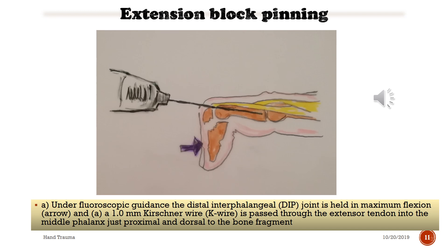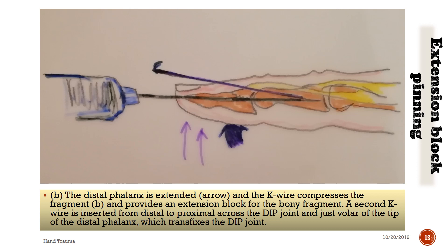Under fluoroscopic guidance, the distal interphalangeal joint is held in maximum flexion, and a one-millimeter Kirschner wire is passed to hold the extensor tendon into the middle flap, just proximal and dorsal to the bony fragment. The distal phalanx is then extended — notice the arrow — and the K-wire compresses the fragment and provides an extension block. A second K-wire is inserted from distal to proximal across the DIP joint, transfixing the distal phalanx and locking the DIP joint.